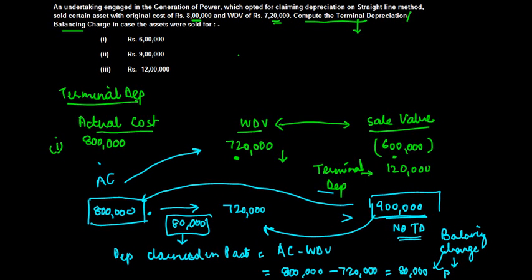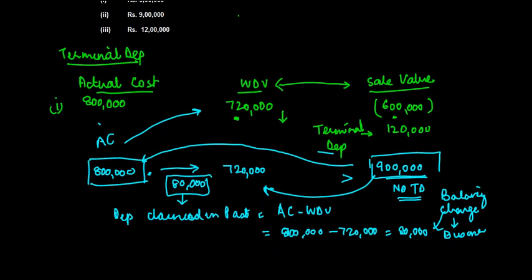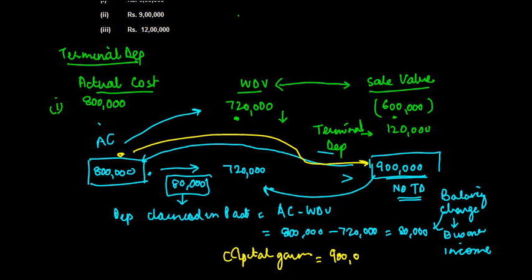And the difference between the actual cost and the sale consideration is capital gains, which is 9 lakh minus 8 lakh, 1 lakh.